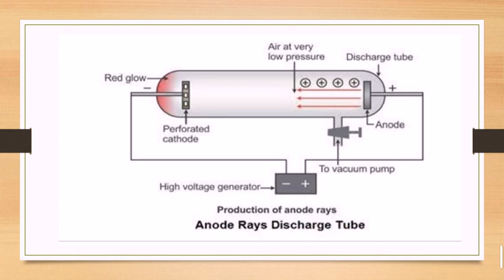He wanted to show that there was something that would pass through these pores and strike the wall of the discharge tube, producing a glow that was majorly different from the glow produced in the previous cathode ray experiment. This experiment was also kept at very low pressure — 10 to the power of minus 4 atmospheric pressure.